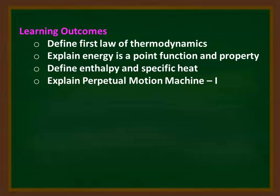The learning outcomes: at the end of this lecture, you will be able to define the First Law of Thermodynamics, explain that energy is a point function and a property, define enthalpy and specific heats, and explain the perpetual motion machine of first kind.